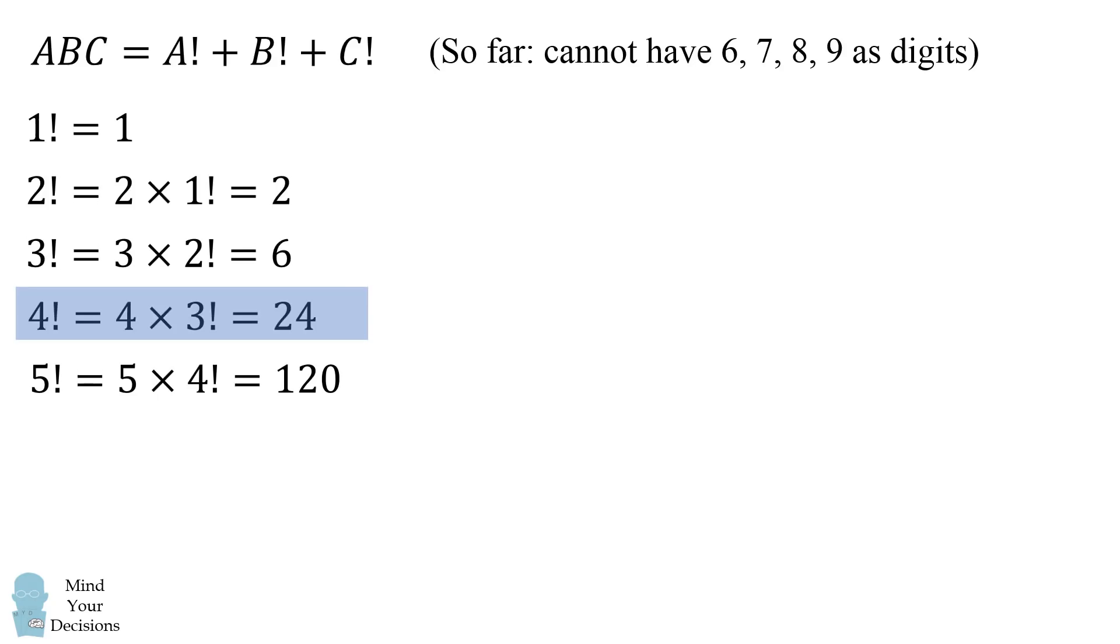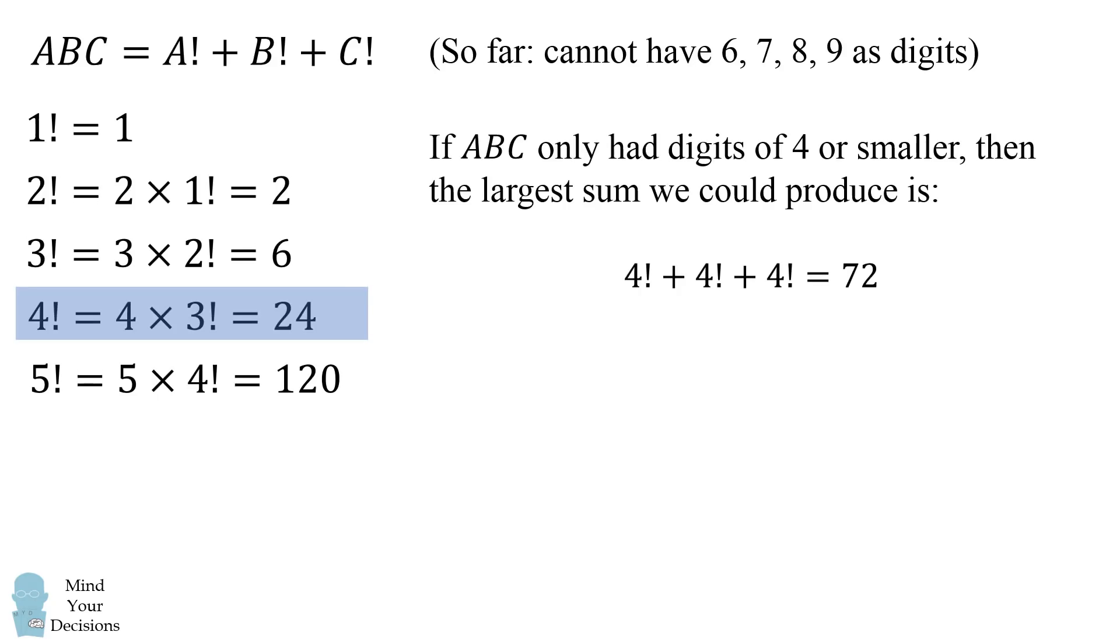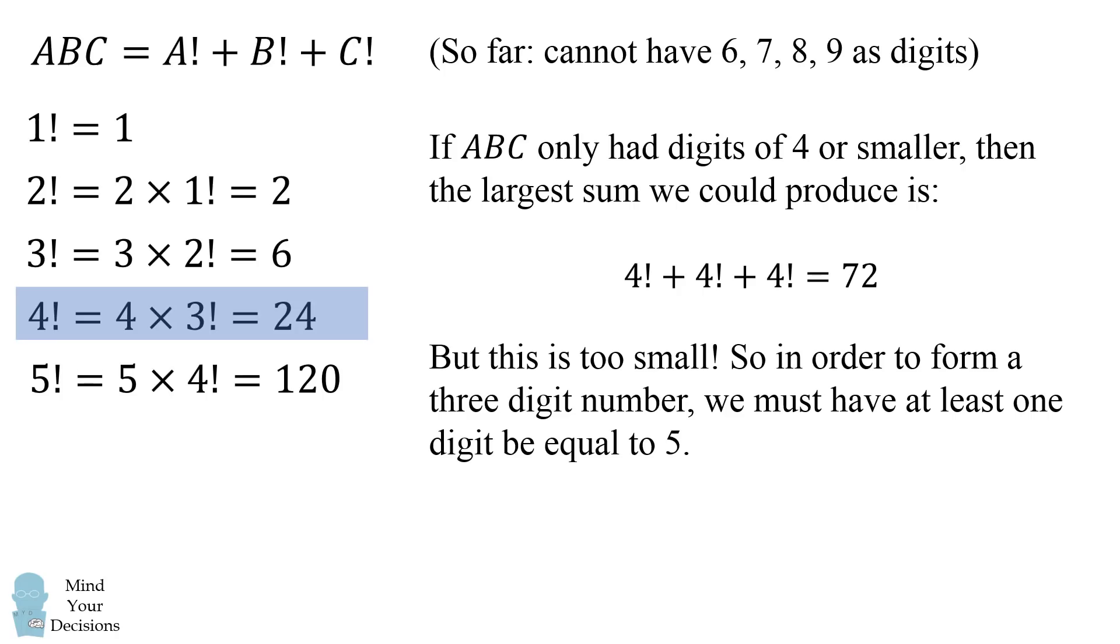Now consider four factorial. If ABC only had digits of four or smaller, then the largest sum we could produce is four factorial plus four factorial plus four factorial which equals 72. But this is too small.